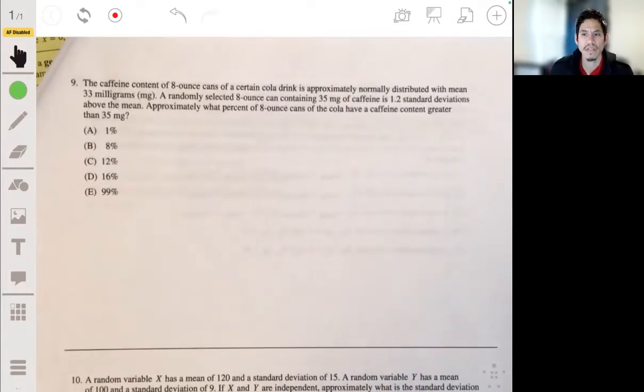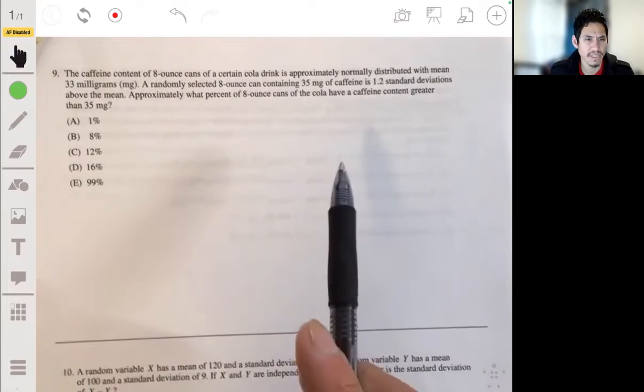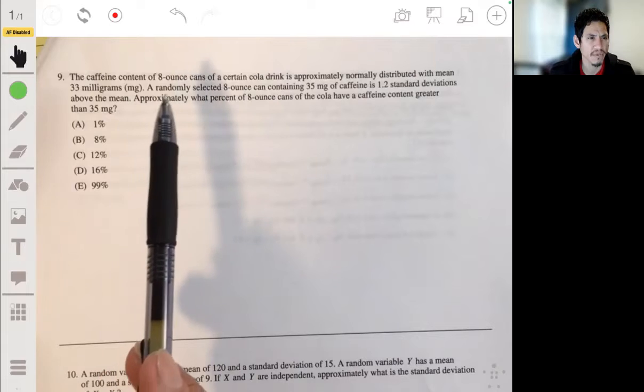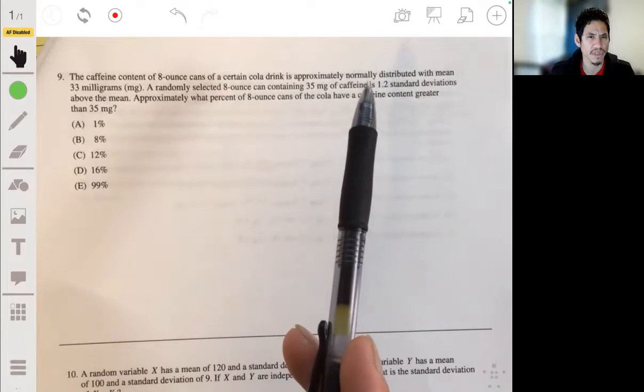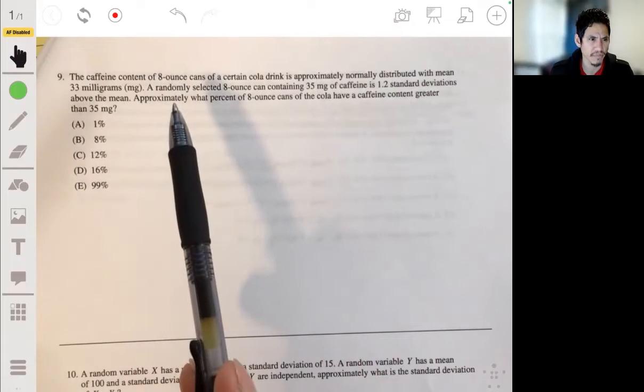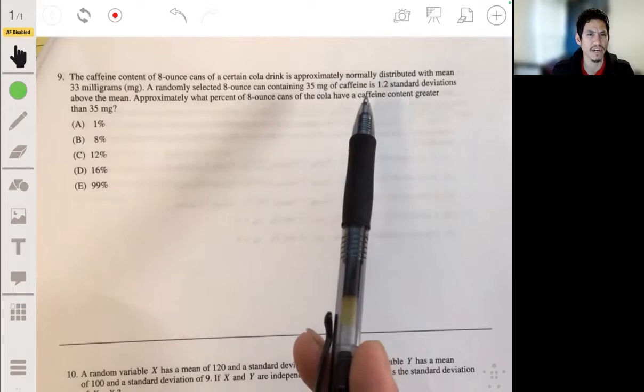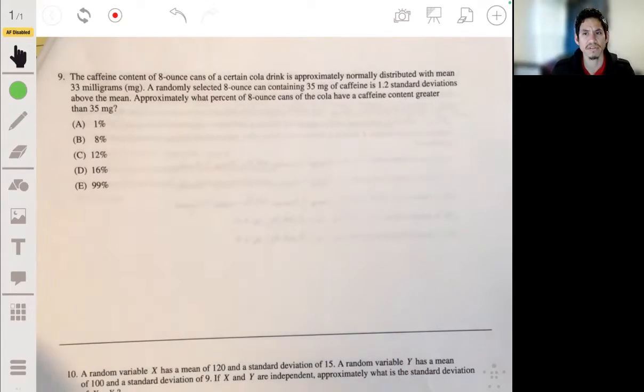Problem nine. The caffeine content of eight-ounce cans of a certain cola drink is approximately normally distributed with mean 33 milligrams. A randomly selected eight-ounce can containing 35 milligrams of caffeine is 1.2 standard deviations above the mean. Approximately what percent of eight-ounce cans of the cola have a caffeine content greater than 35 milligrams? Okay, so we just got to do some calculations.